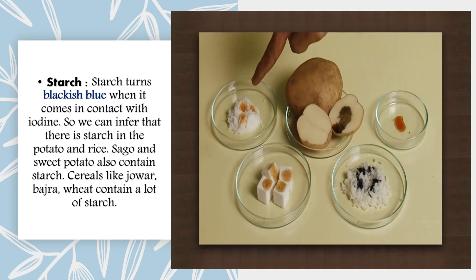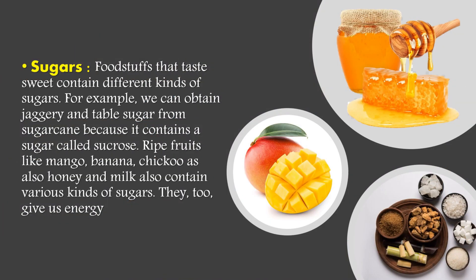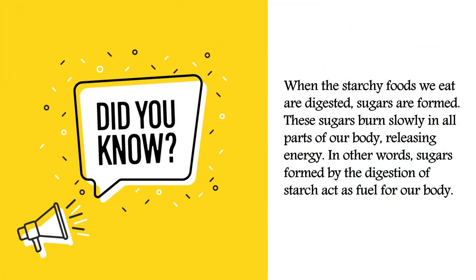Sweet potato and cereals like jowar, bajra and wheat also contain a lot of starch. Another type of carbohydrate is sugars. Food stuffs that taste sweet contain different kinds of sugars. For example, we can obtain jaggery and table sugar from sugarcane because it contains a sugar called sucrose. Ripe fruits like mango, banana and chikku, as well as honey and milk, also contain various kinds of sugars — they too give us energy. When the starch of foods we eat is digested, sugars are formed. These sugars burn slowly in all parts of our body releasing energy. In other words, sugars formed by the digestion of starch act as fuel for our body.